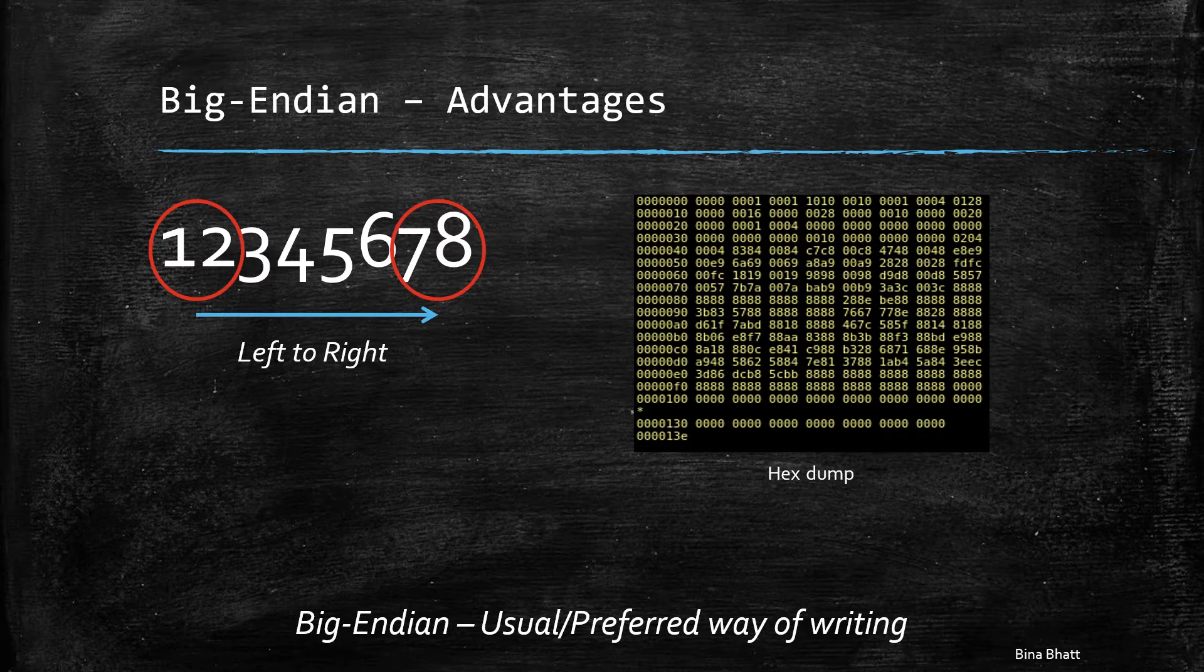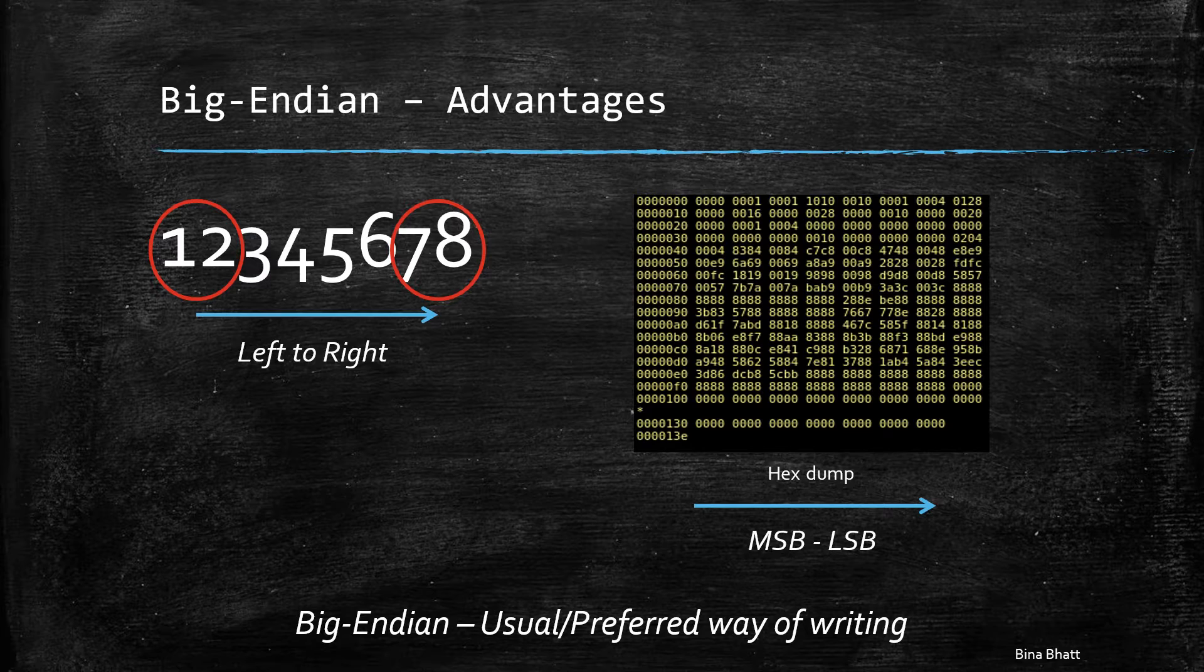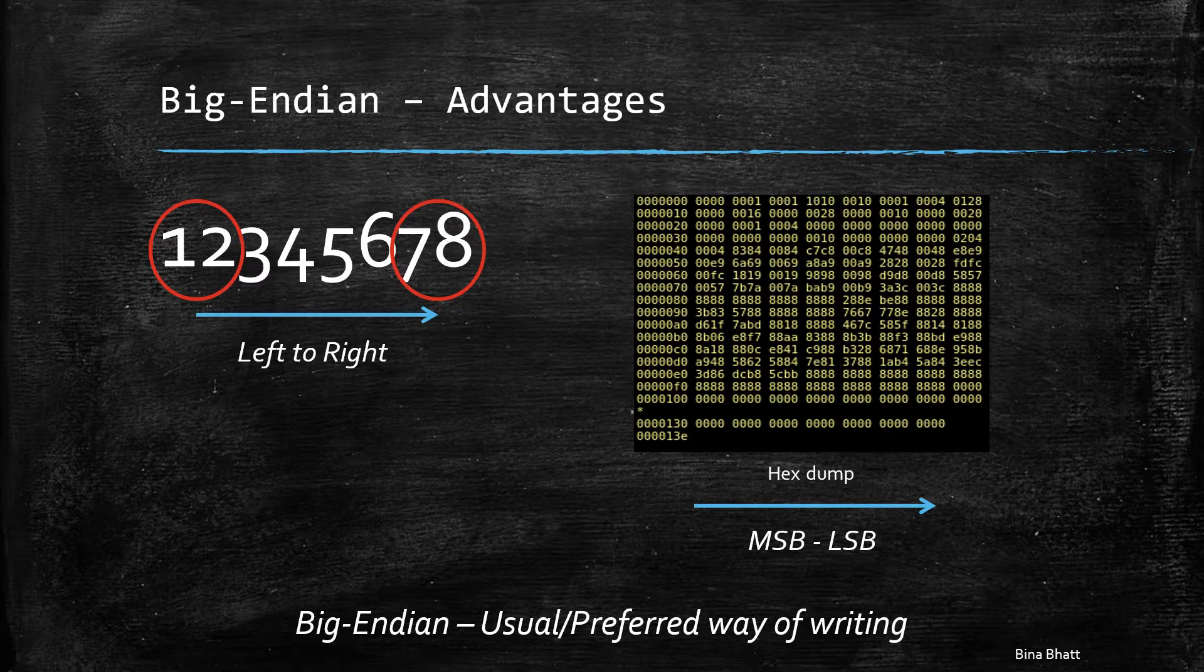So if you ever look at the hex dump of a computer, then it would be easier to decipher the data which is represented in big endian order.